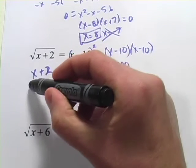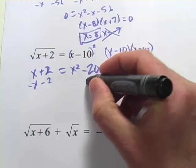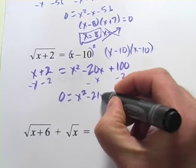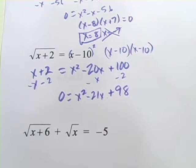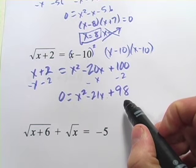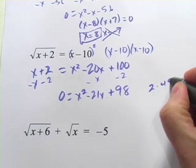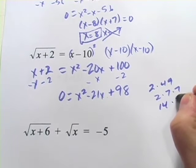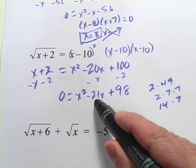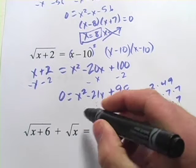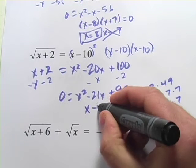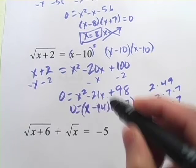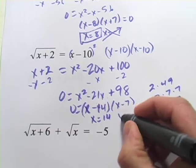Now we'll arrange this as a quadratic by subtracting x and subtracting 2. And we get 0 equals x squared minus 21x plus 98. All right, so let's see if we can factor this one. 98, I know, is 2 times 49. So that's 2 times 7 times 7. So you could have 14 and 7 as factors. That could add up to 21. Yeah, I think we've got x minus 14 and x minus 7. And when you solve those, you get x equals 14 and x equals 7.